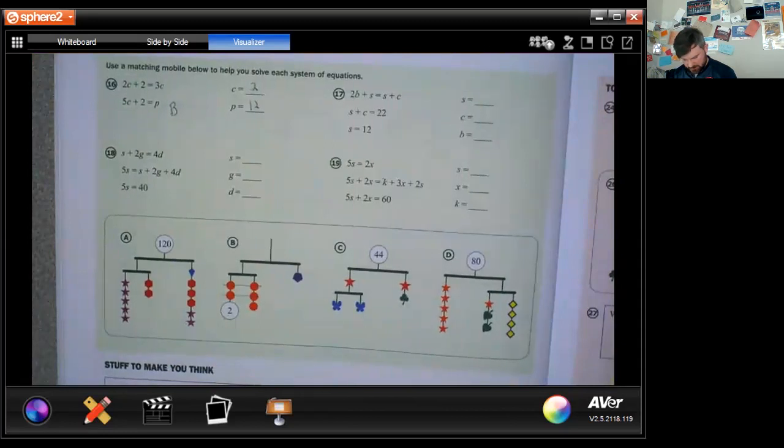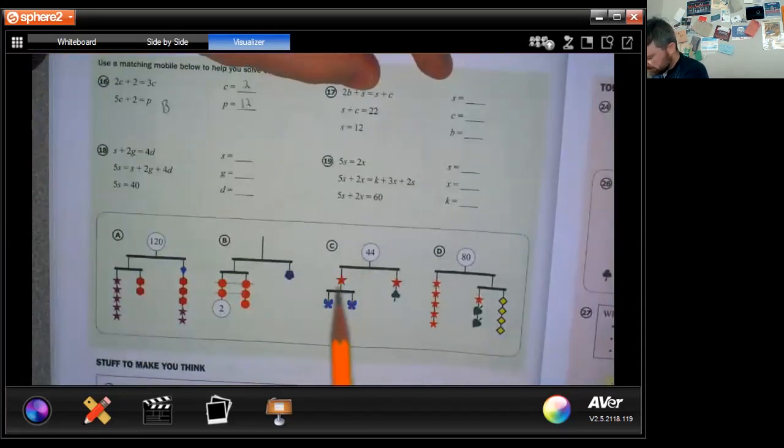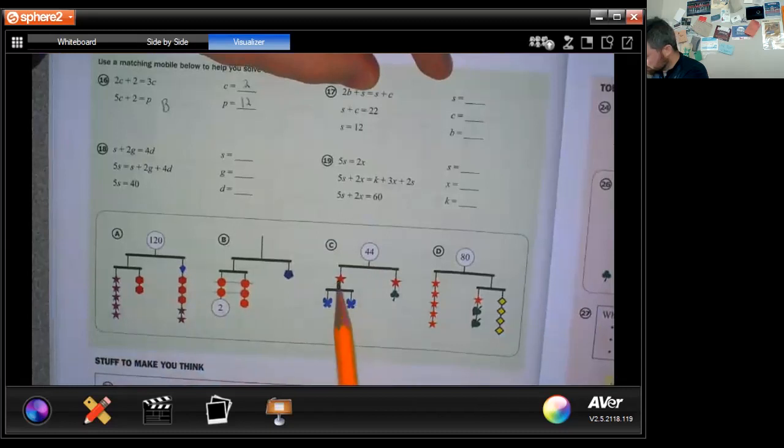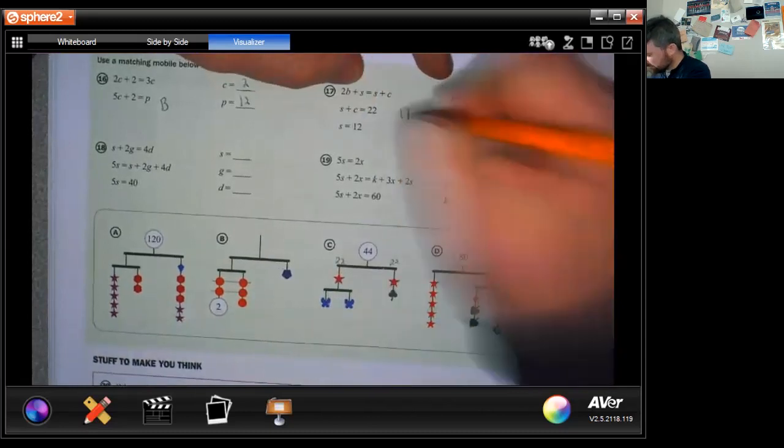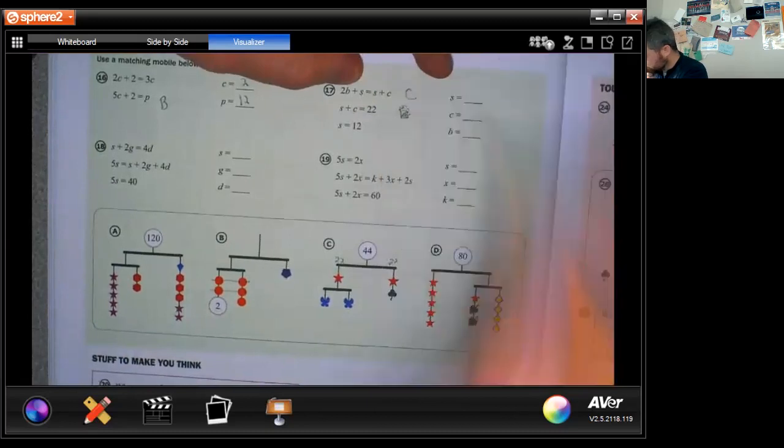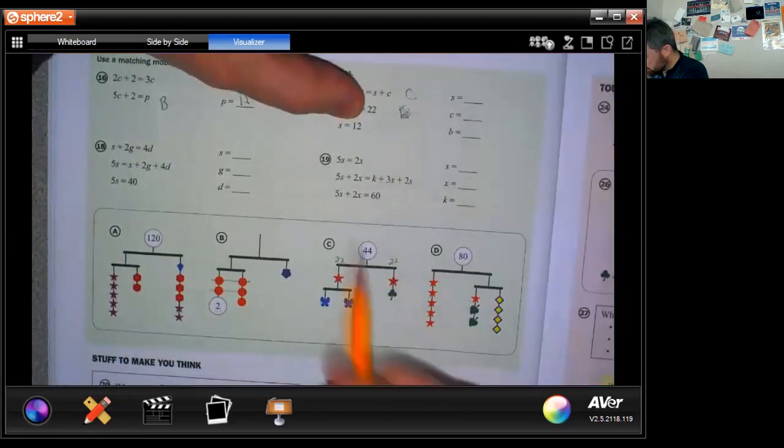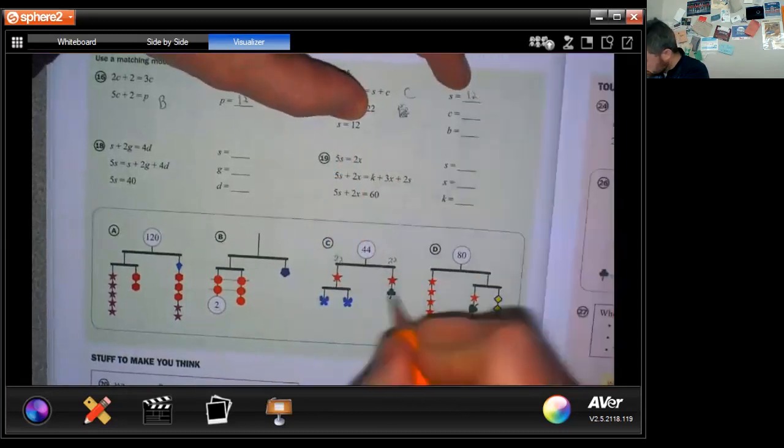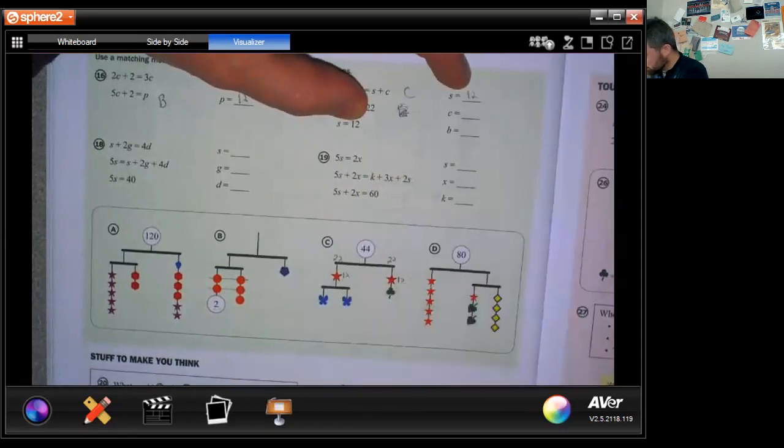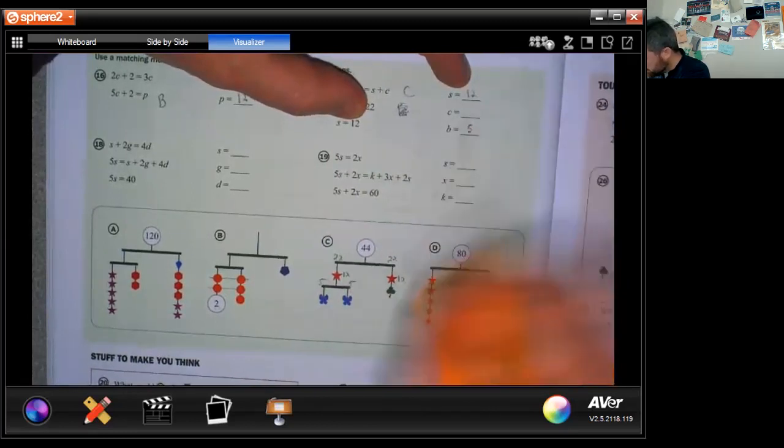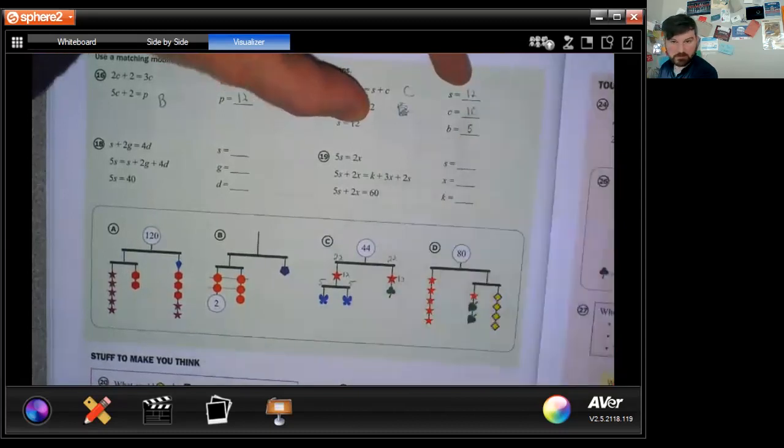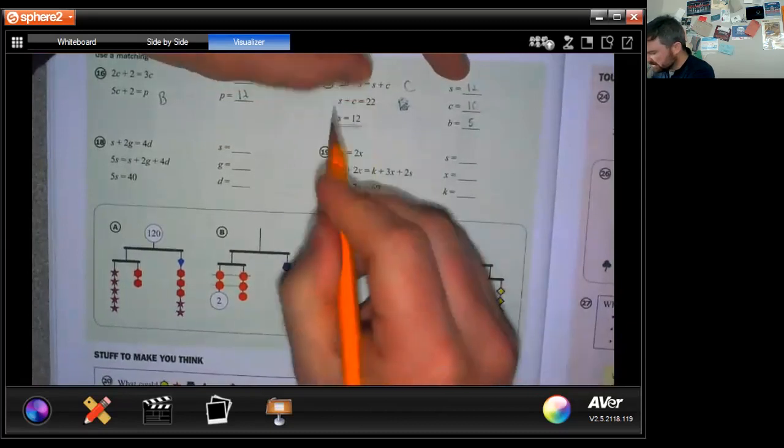Problem 17, two butterflies plus a star equals a star plus a circle. A star plus a circle equals 22. So each one of these is 22. So this is C. So 22, a star, they tell us, is 12. So this star is 12 and 12. So 22 minus 12 is 10. So that's 5 and 5. So butterfly is 5. And a clover is 10. So 12, 10, and 5. It's nice when they give you in the system one of the answers.